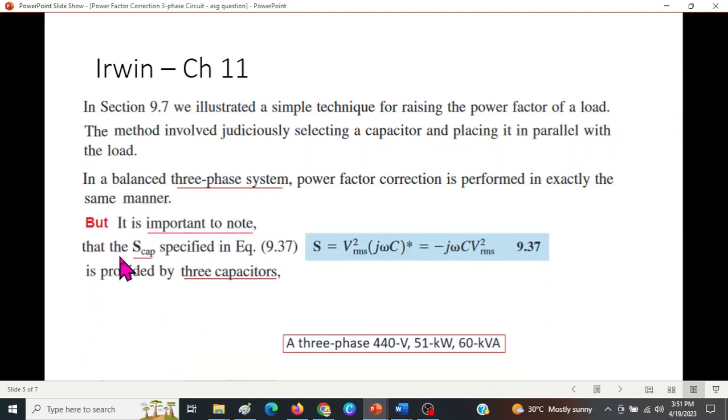It is important to note that the S capacitor or Q capacitor or Qc specified in this equation is for three capacitors. So we have to keep that in mind. For single capacitor we have to divide Qc by three. In addition, Vrms in equation is the voltage across each capacitor. Now this was the confusion in the question. It was given like this: a three-phase 440 volt. This power and the kVA rating, these are all for three phase. But what he is saying is that this voltage, 440 volt, is actually the voltage across each load, each capacitor. This is the point that we have to keep in mind.